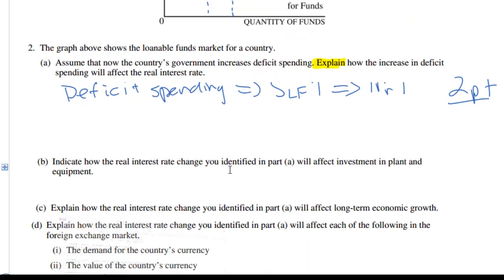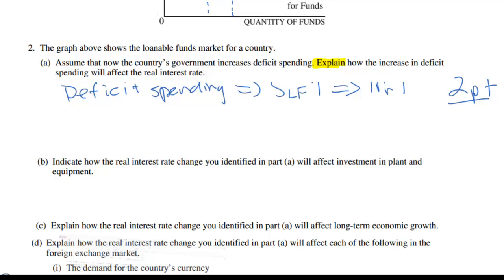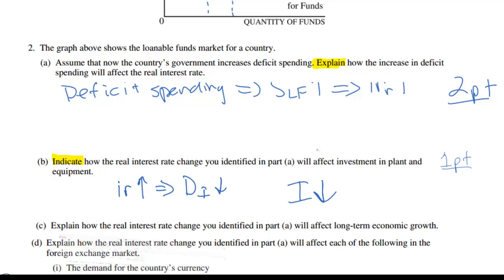Let's look at part B. It says: indicate how the real interest rate change you identified in part A will affect investment in plant and equipment. This question is almost certainly worth only one point because it says 'indicate.' Investment in plant and equipment refers to private investment in the economy. Higher interest rates lead to a decrease in the demand for investment since investment demand is inversely related to the interest rate. Therefore investment decreases — that's all we need for our one point. Investment spending will decrease when interest rates increase.